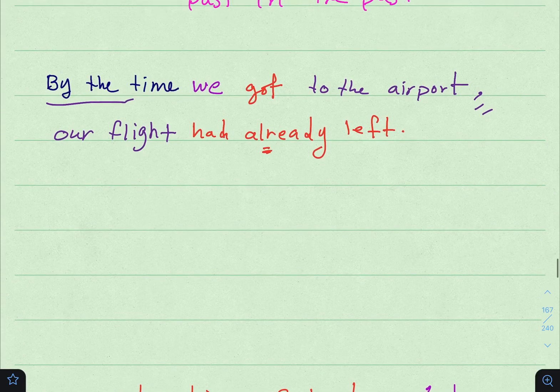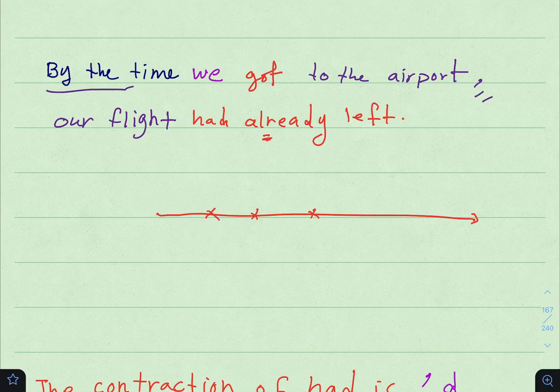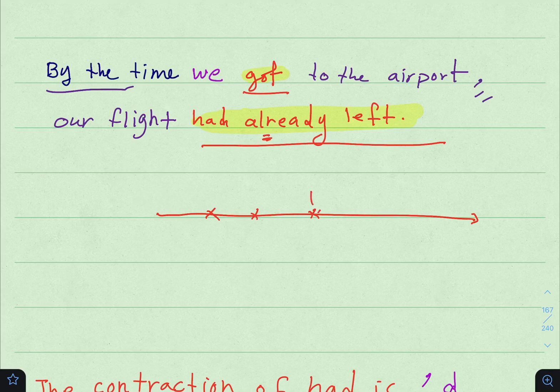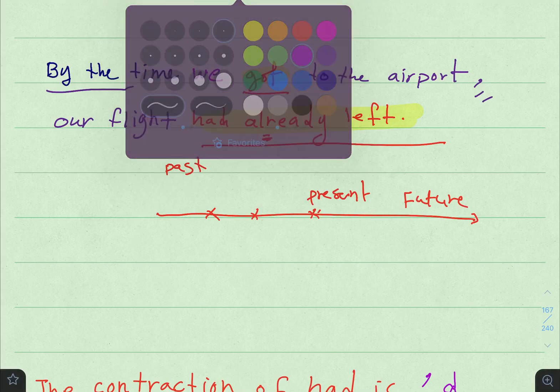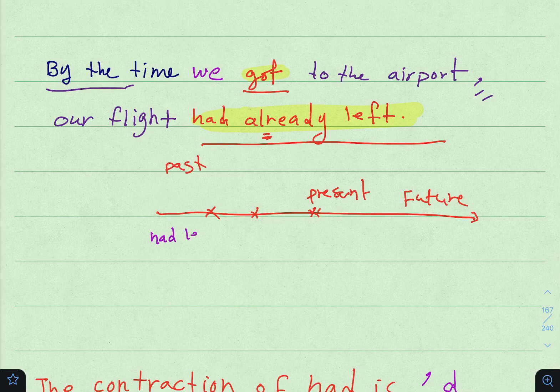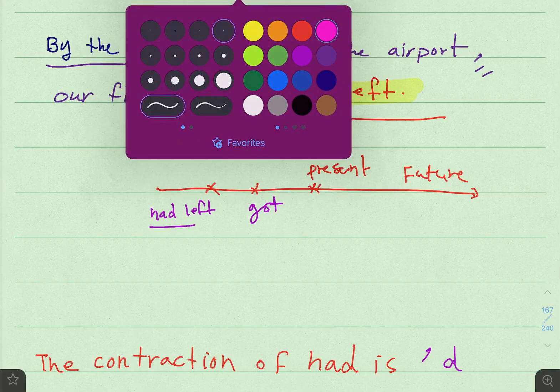How many actions do we have? كم حدث لدينا؟ We have two actions: 'got' and 'had left' or 'had already left'. This is Simple Past, this is Past Perfect. Both events are in the past. Which event happened first? The flight had left - this is Past Perfect, happened first. Then we got there.